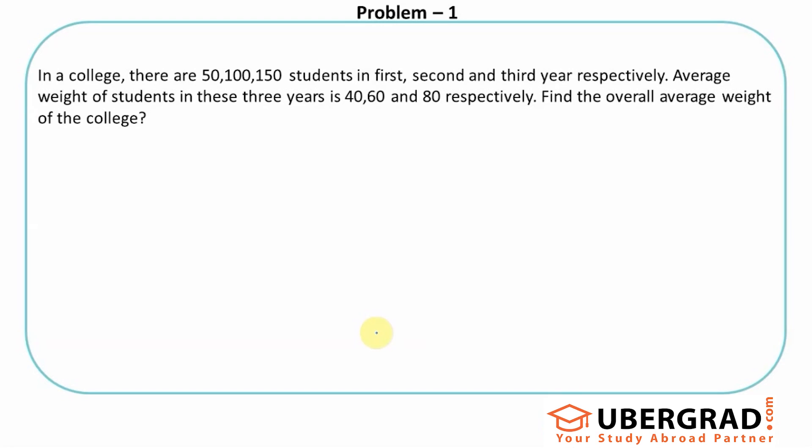Hope you have paused and tried. So the first question is, in a college there are 50, 100, 150 students in the first, second, and third year respectively. The average weight of the students in these three years is 40, 60, and 80. Find the overall weight of the college.